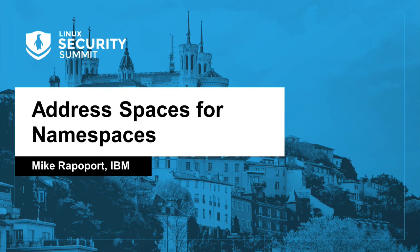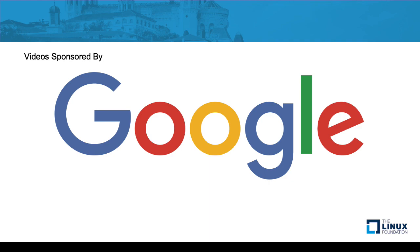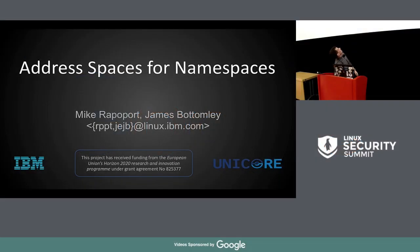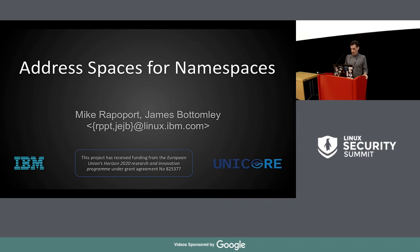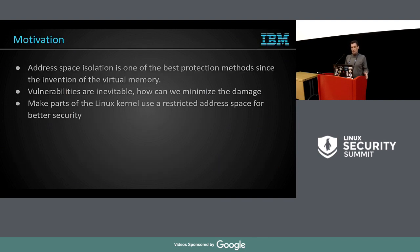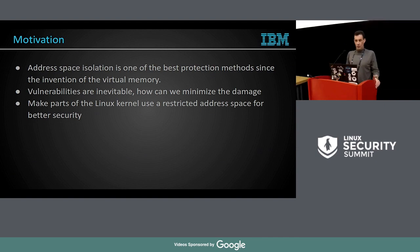Our next talk is from IBM. Mike Rappaport is going to be talking about address spaces for namespaces. He has been working for IBM research for a couple of years, and the current research field is how to make containers more secure. Since address space isolation is the ultimate protection method since the invention of virtual memory, they are trying to make use of the MMU and address space isolation inside the kernel mappings to make the Linux kernel environment more secure, particularly for container engines and container users.